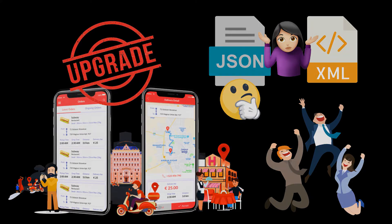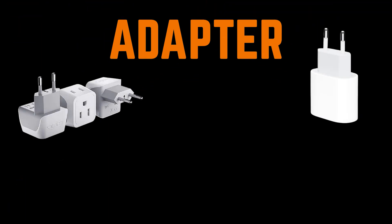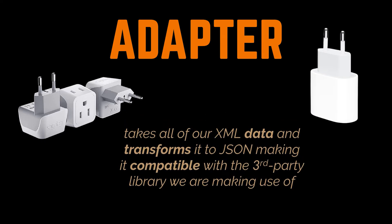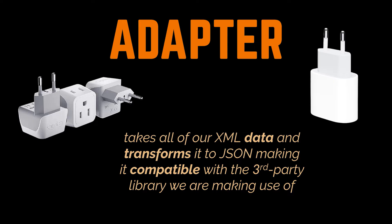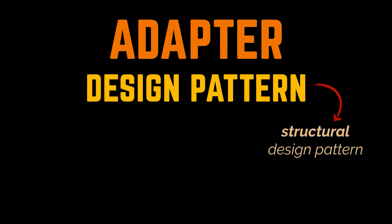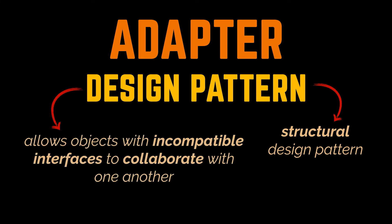Worse, you might not even have access to the library source code in the first place, making this approach impossible. Therefore, what we need is kind of an adapter — similar to the one you use between the American and European power plug. This adapter will take all of our XML data and transform it to JSON, making it compatible with the third-party library. So the adapter pattern is a structural design pattern that allows objects with incompatible interfaces to collaborate with one another.